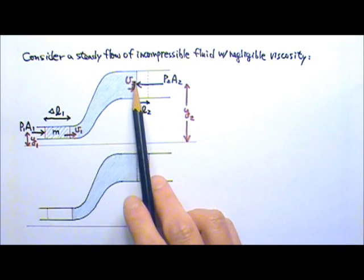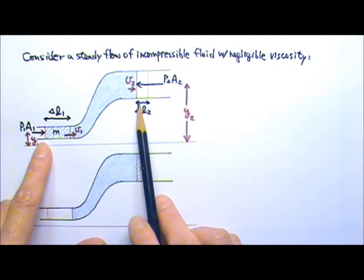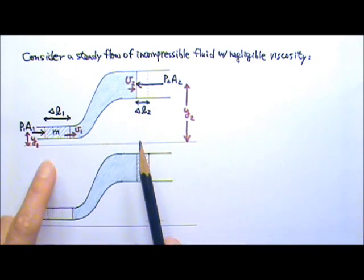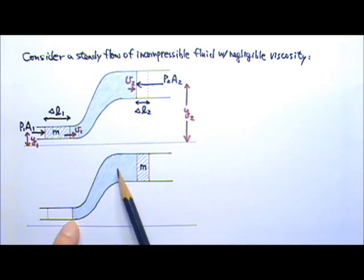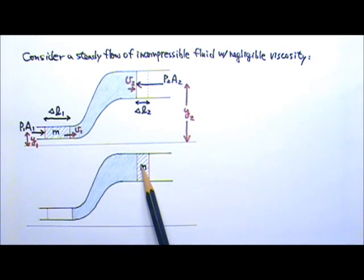So this part of the fluid is over here in this region at the beginning of the time interval and it is in this region at the end of the time interval. Because it is a steady flow, this part of the fluid is effectively unchanged.